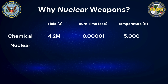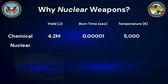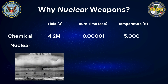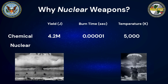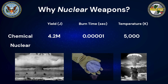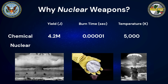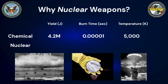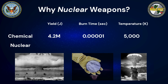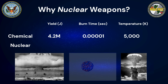Now, if we compare the values for chemical explosion yield, burn time, and temperature to the equivalent values for a nuclear explosion, we begin to understand some of the key differences. For this example, let's assume our fuel consists of only one kilogram of uranium-235 — the same total mass as the TNT we discussed earlier. In the case of the nuclear fuel, the energy is not emitted from chemical reactions.